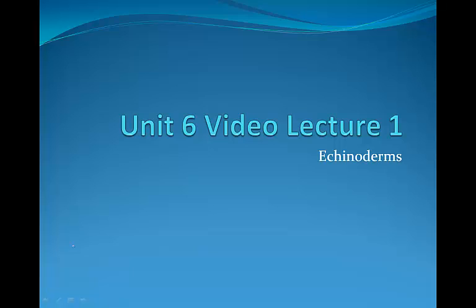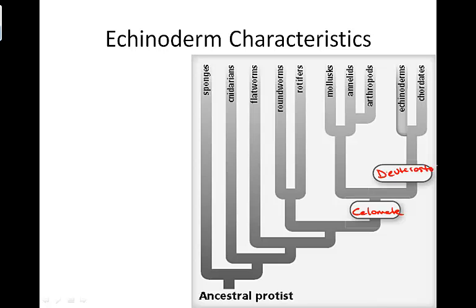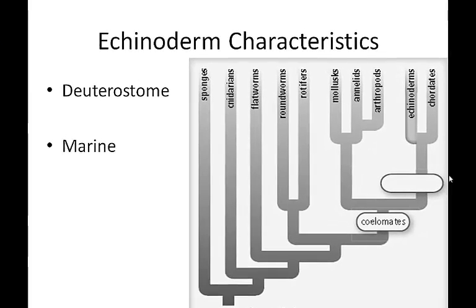Unit six video lecture one: echinoderms. When we talk about echinoderm characteristics, remember the thing that's going to separate the molluscs, annelids, arthropods, echinoderms, and chordates is the fact that these are coelomates. Coelomates are going to have that true body cavity. What's going to distinguish echinoderms and chordates from molluscs, annelids, and arthropods is that echinoderms and chordates are deuterostomes.